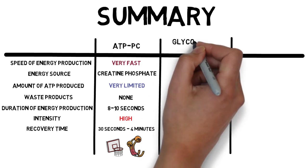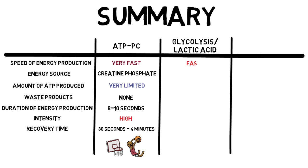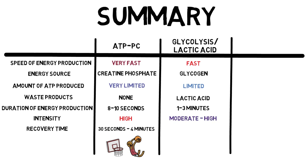When it comes to energy production, glycolysis is fast. The energy source is glycogen. The amount of ATP produced is limited, and it has waste products of lactic acid. You can get 1 to 3 minutes worth of energy production, and it will be between moderate and high intensity. The recovery time for glycolysis can be anywhere between 20 minutes and 2 hours. Glycolysis predominantly deals with activities with varying moderate intensities, such as football or rugby.